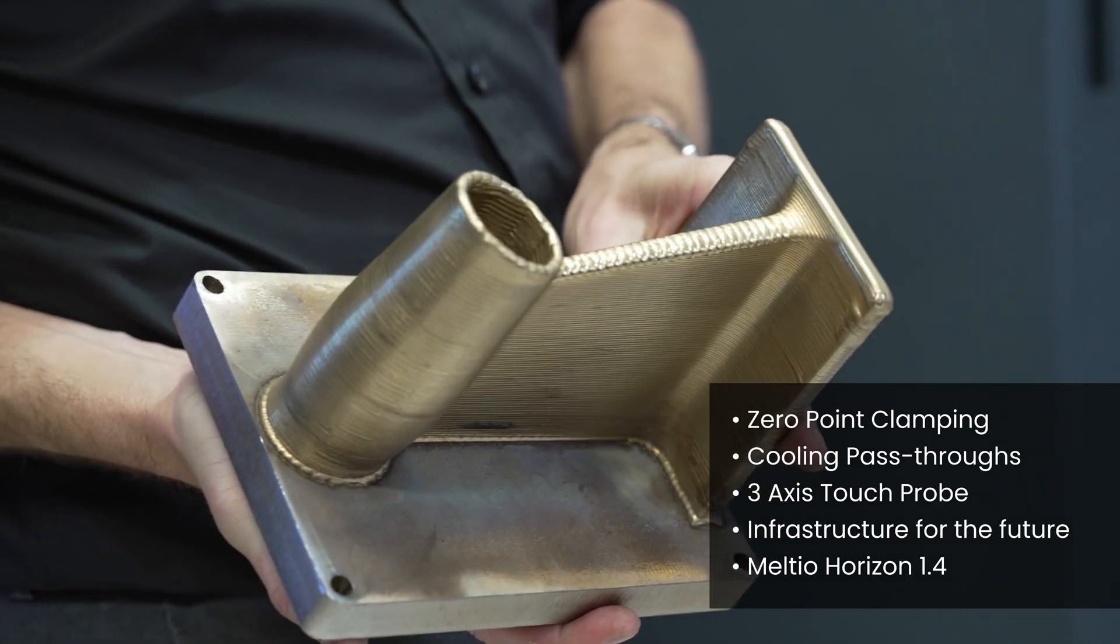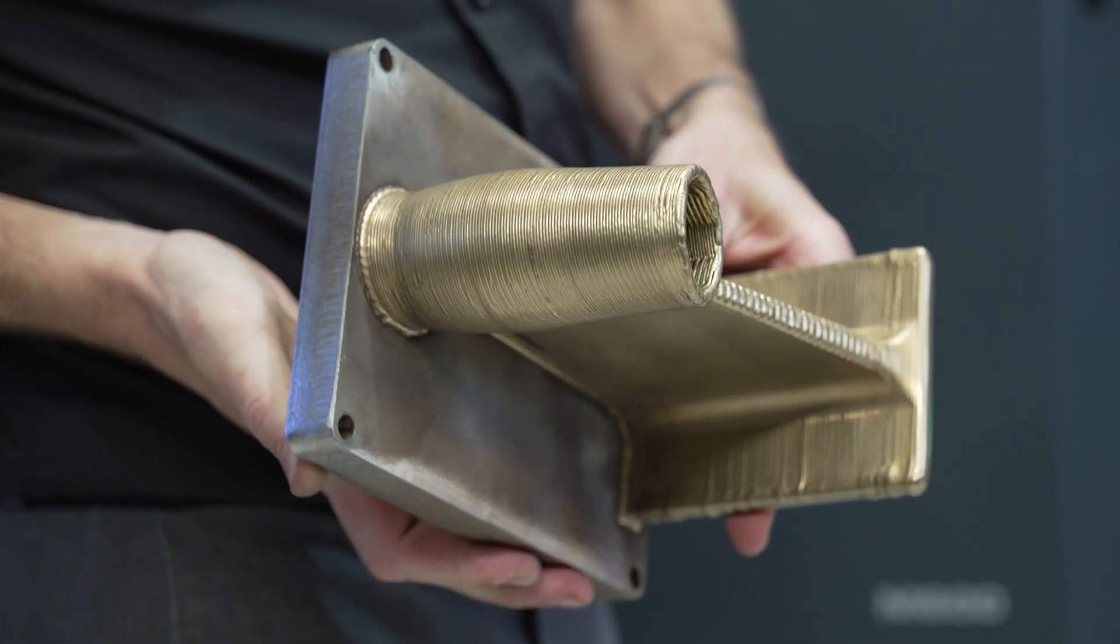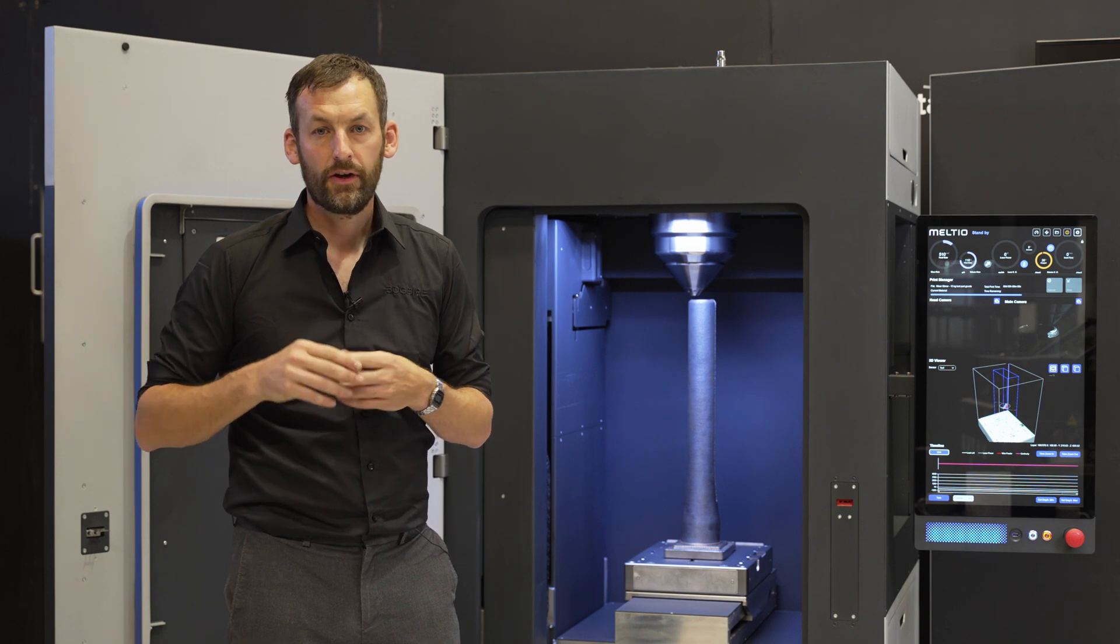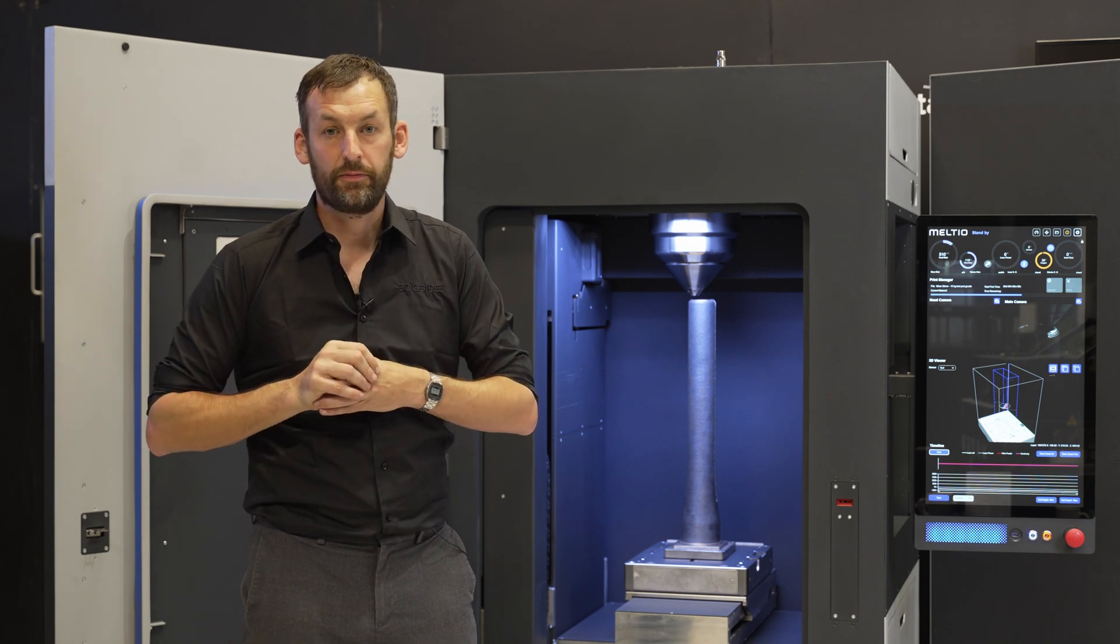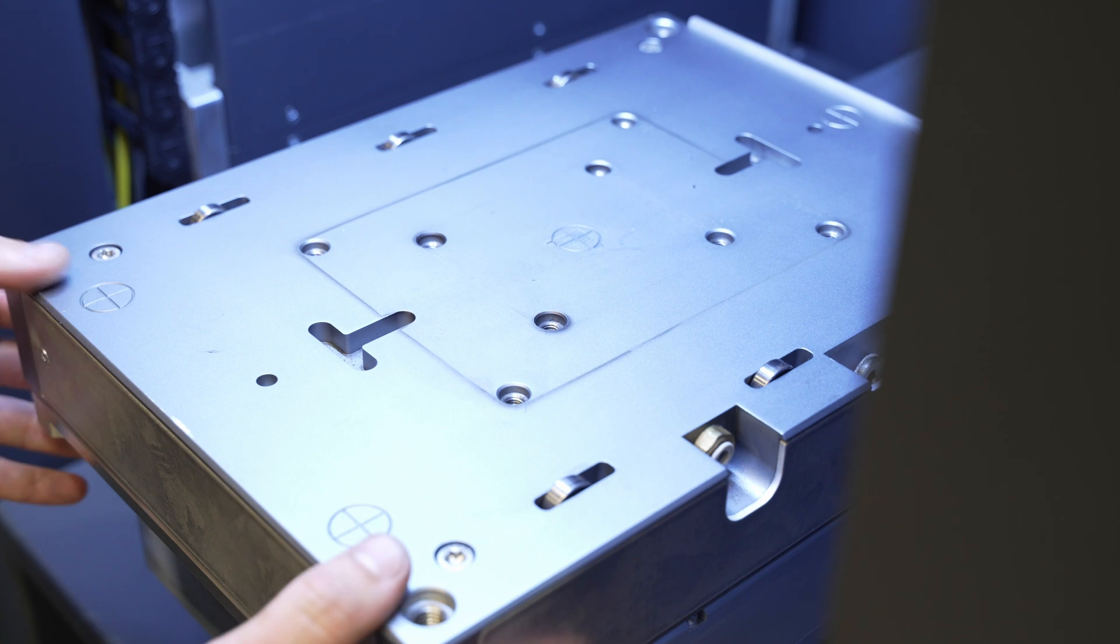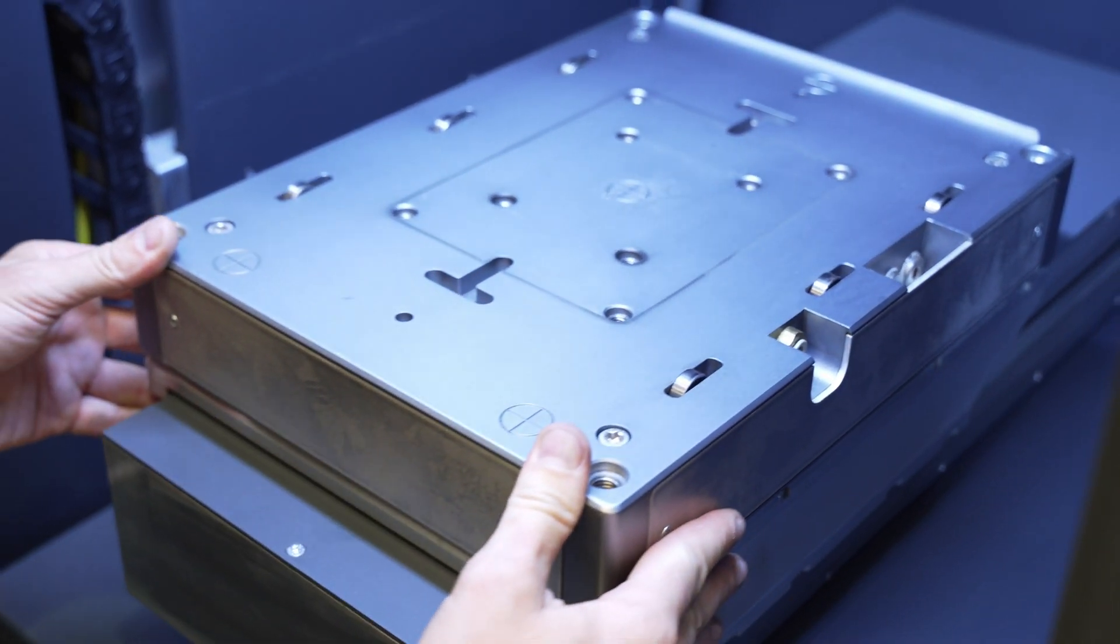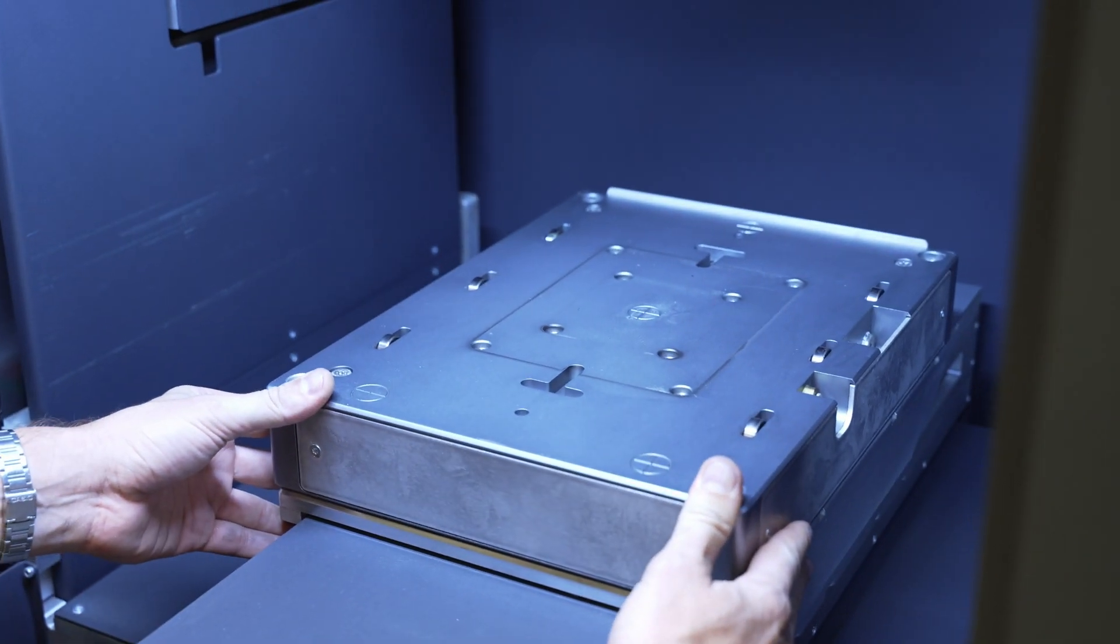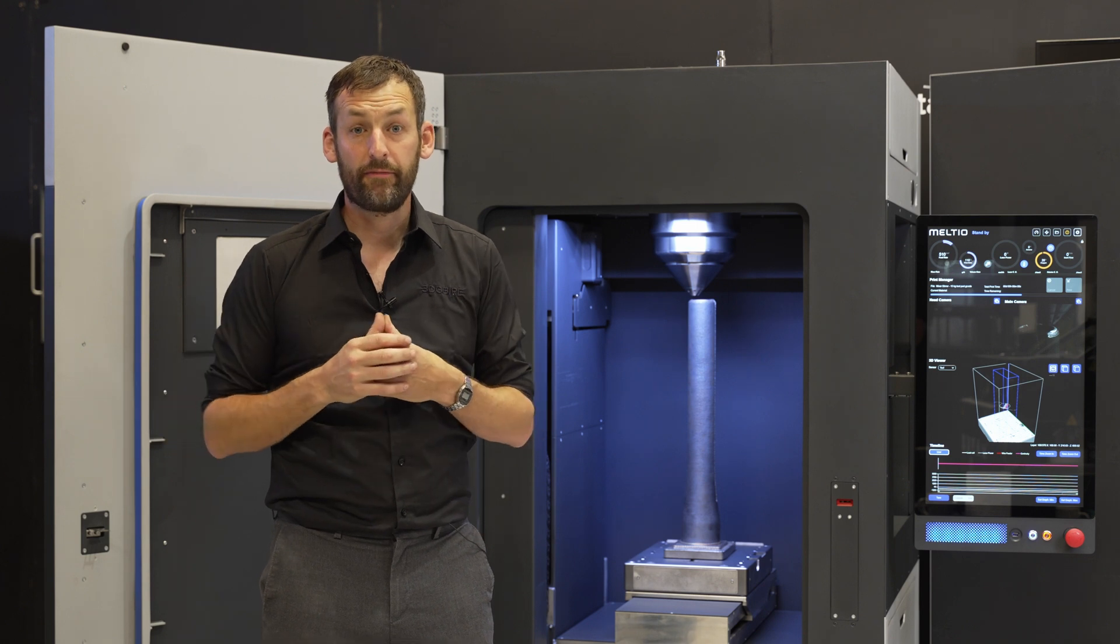The M600 also features an inbuilt three-axis touch probe perfect for repair applications or feature addition to existing substrates. Coupled with a zero-point clamping system, we can go back and forth from our CNC machine to produce parts in methods we haven't used before.